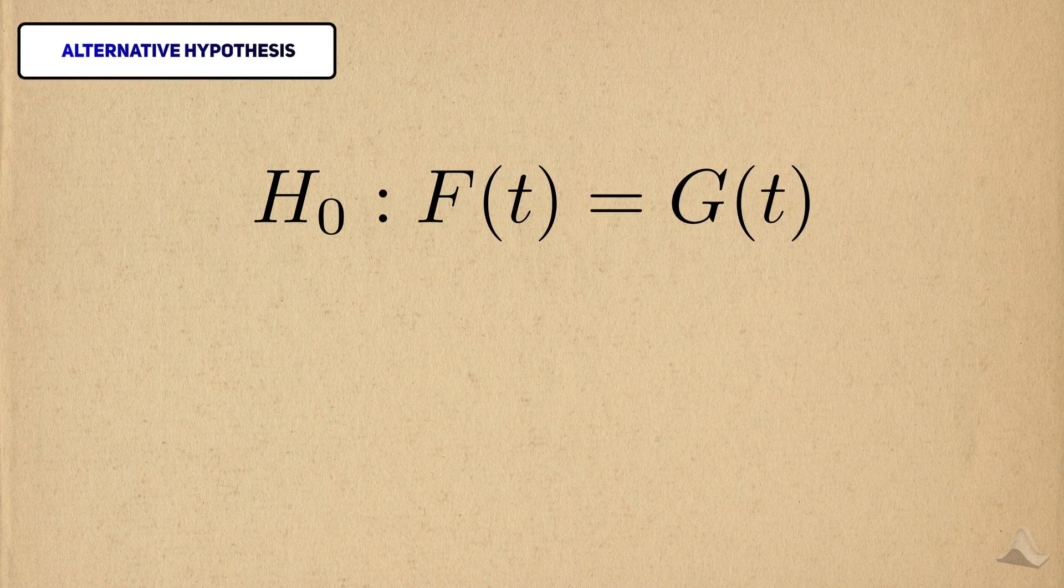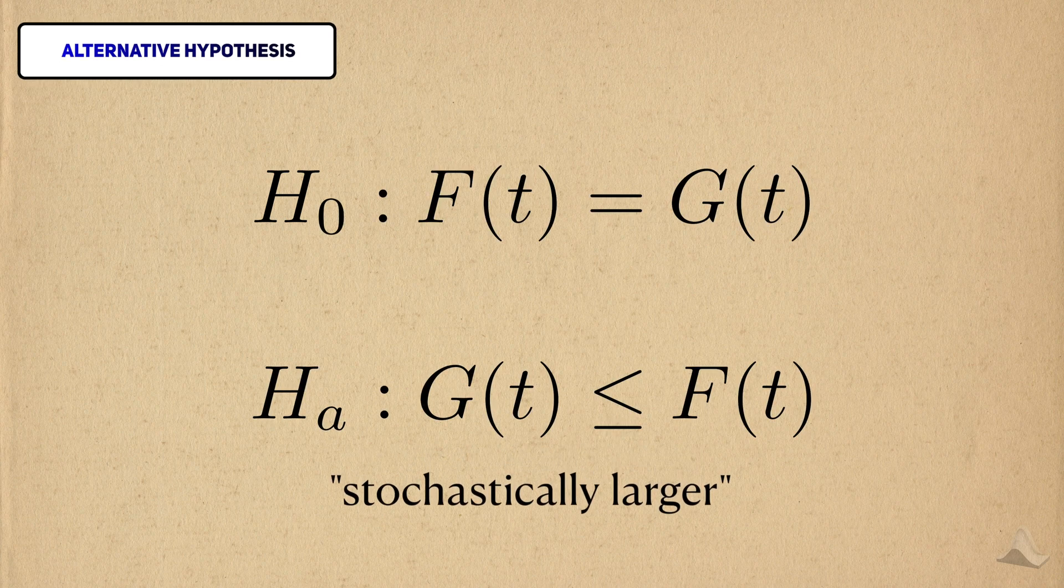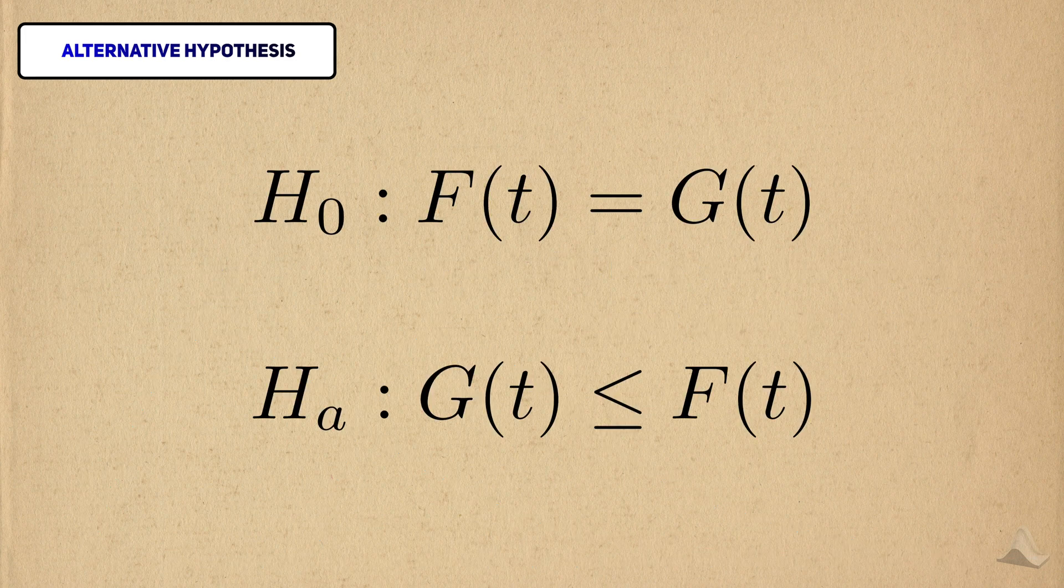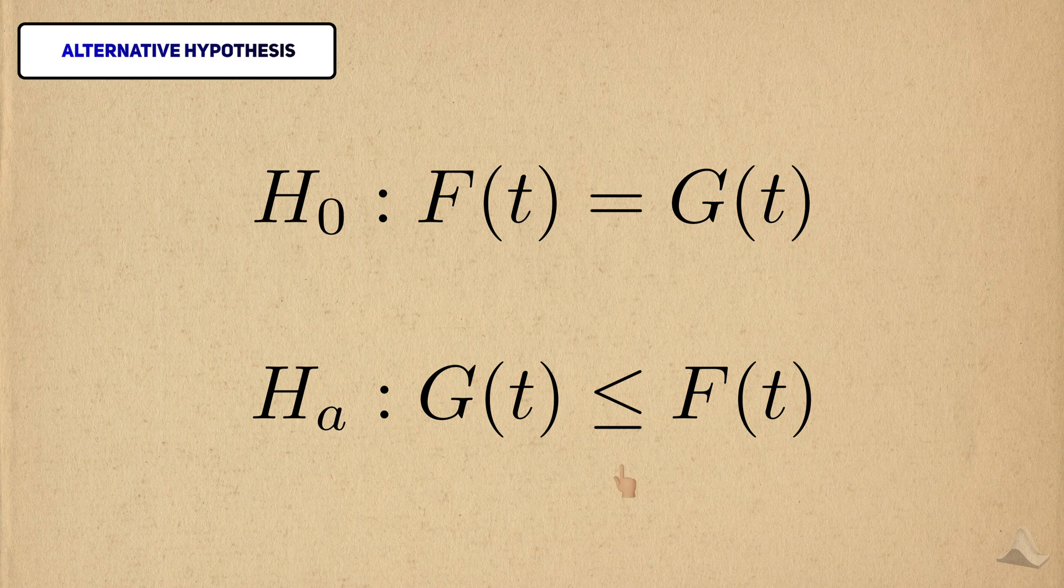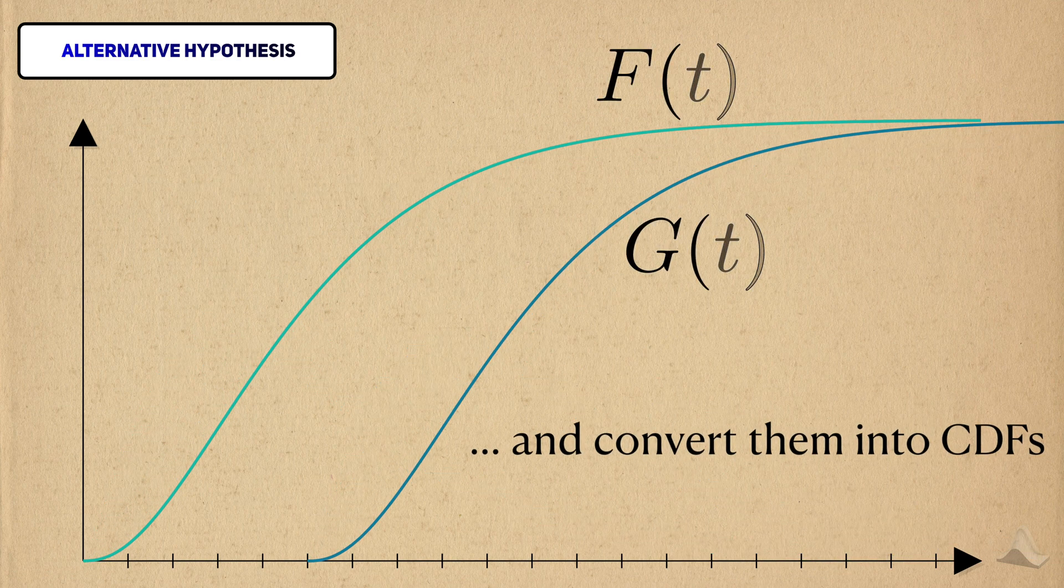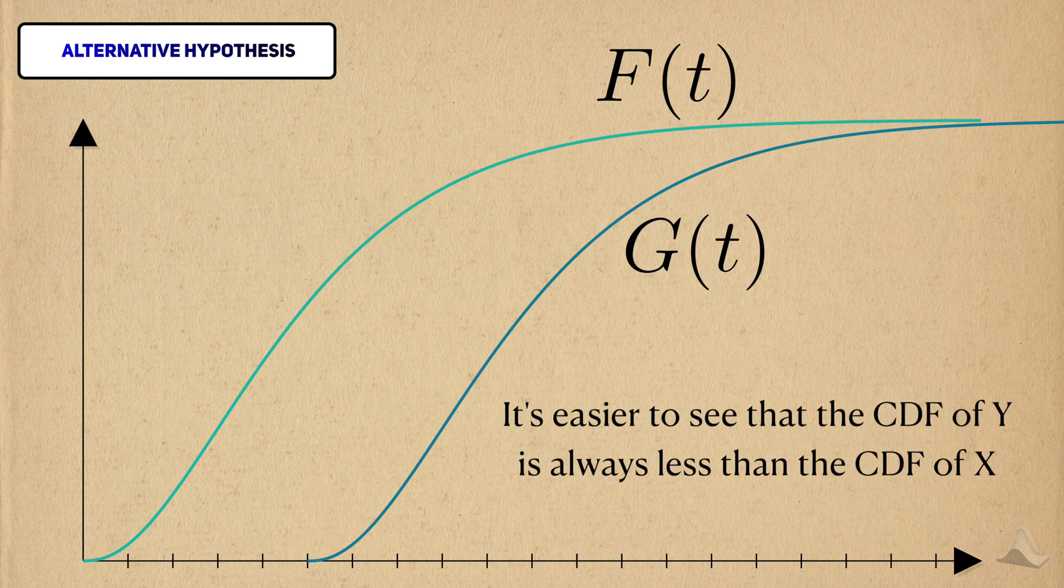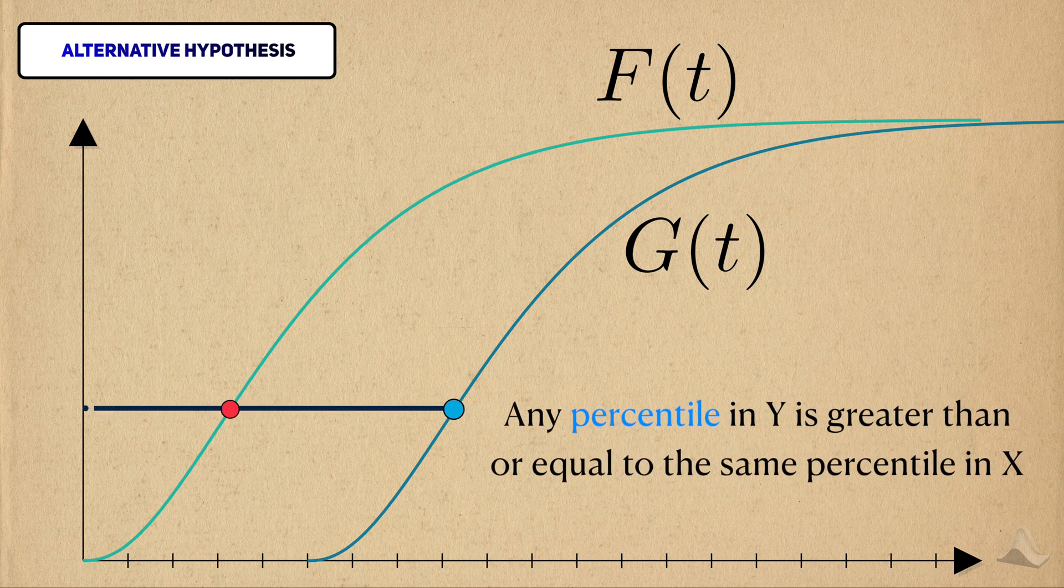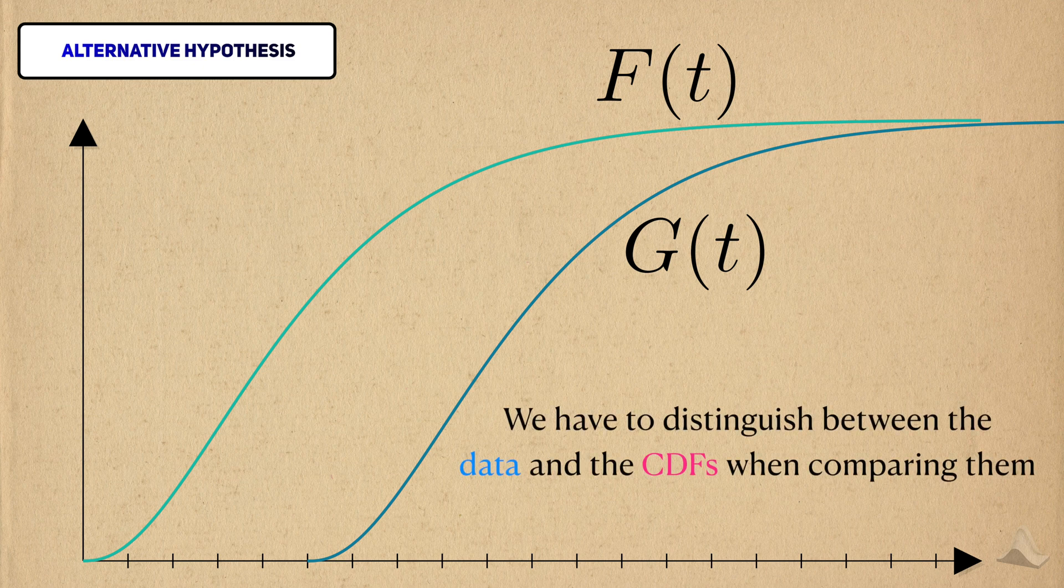The alternative hypothesis is that one of the distributions is what we call stochastically larger than the other. For simplicity, we'll say that y is larger than x. To denote this, we write that the CDF of y is less than or equal to the CDF of x. This may seem weird, but let's visualize it. From the perspective of the PDF, the distribution of y is greater than x, so it's shifted to the right. But if we take these two PDFs and convert them to their CDFs, we'll see that in fact the CDF for y is lower than that of x. What this captures is that percentiles in y are generally greater than the corresponding percentiles in x. We have to distinguish between the data from x and y and the CDF of x and y.